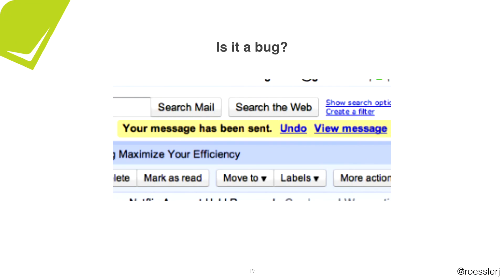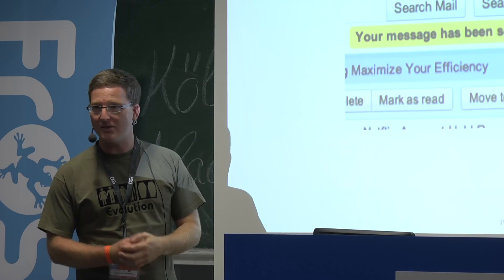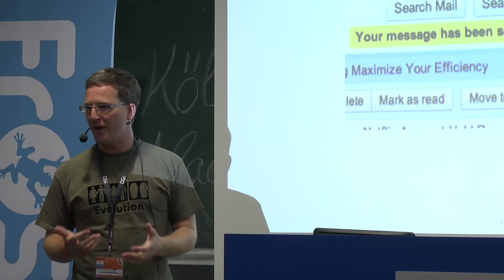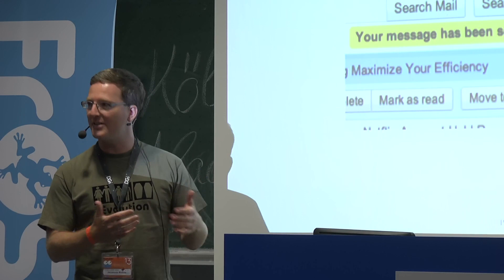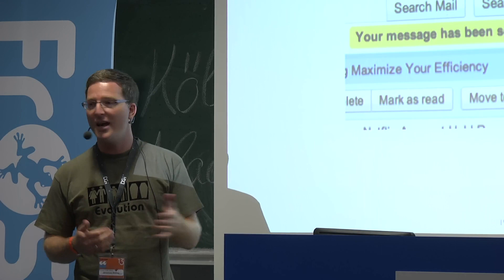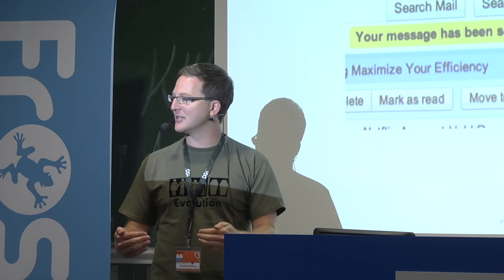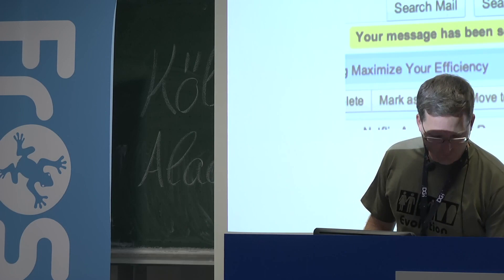Last example: Gmail. There's a feature where you can undo sending an email. This was an accident. Google has services throughout, and when you click Send it takes a couple of seconds to validate the email and check for viruses. They had a delay they couldn't get rid of, so instead they turned it into a feature — the time it takes to validate is the time you have to click undo. They turned a problem into a feature.